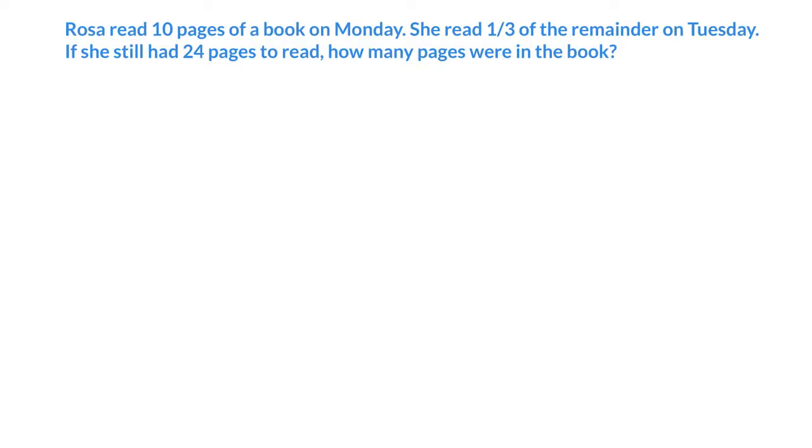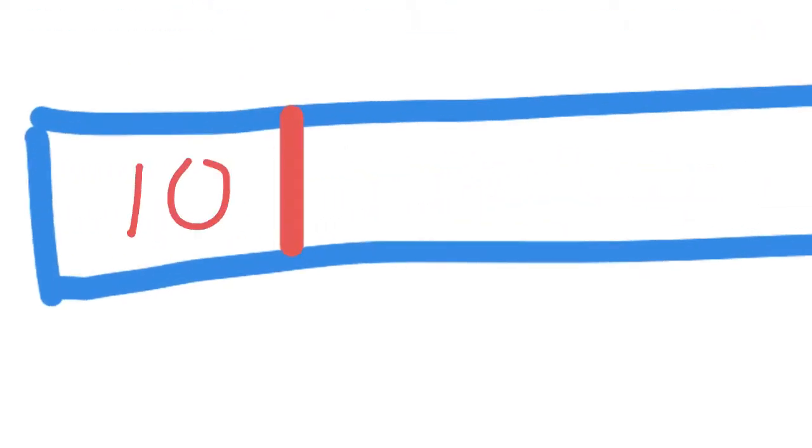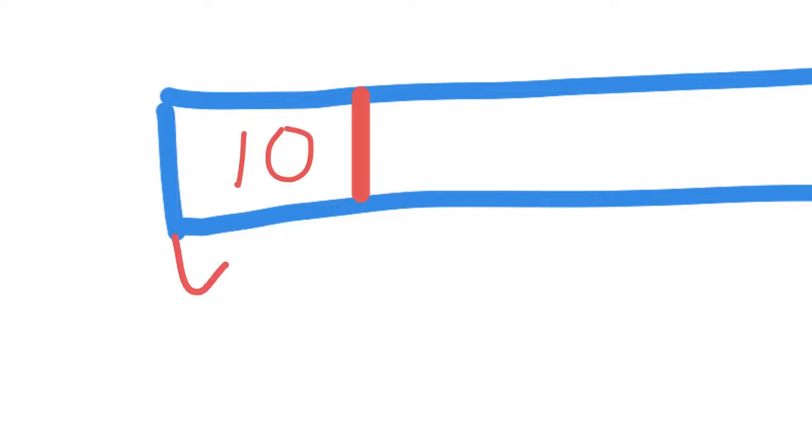Okay, so first of all, I'm going to draw a nice big long bar to represent the whole book. The first thing I'm told is that she read 10 pages on Monday. So I'm going to go ahead and chop this bar here. And I'm going to label that 10 for Monday.